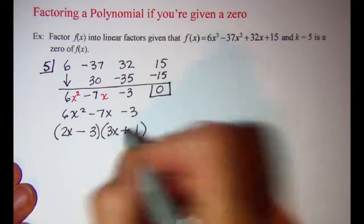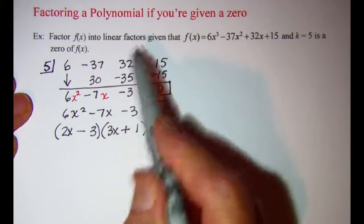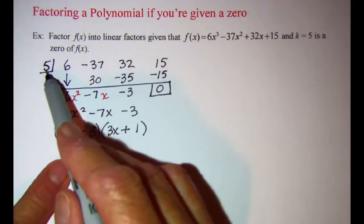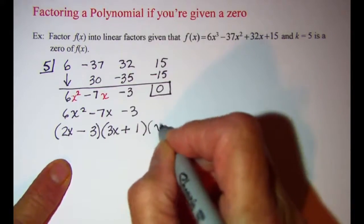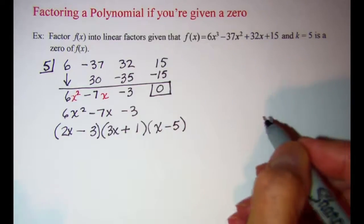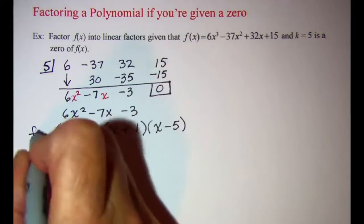So I have my linear factors. I have two of them right here, and then I also have k equals 5, which means x minus k, or x minus 5, is going to be my third linear factor of f(x).